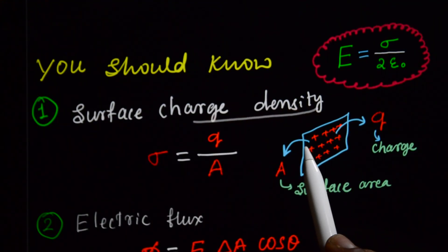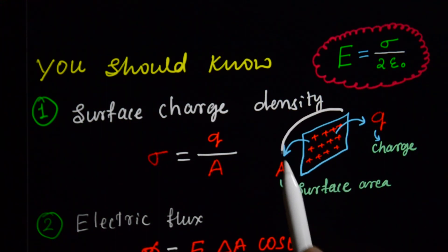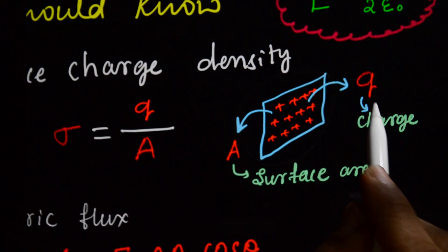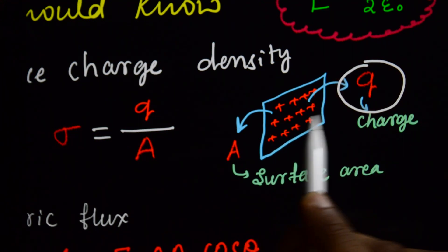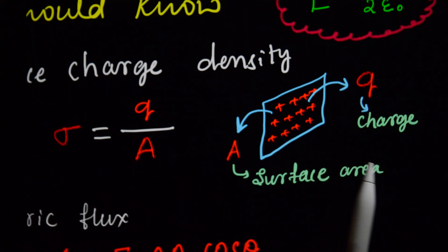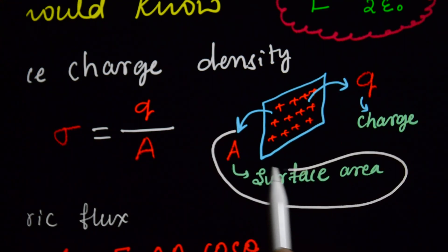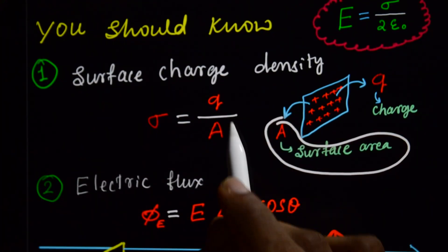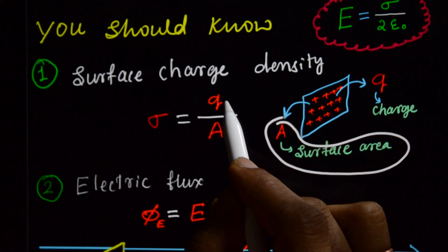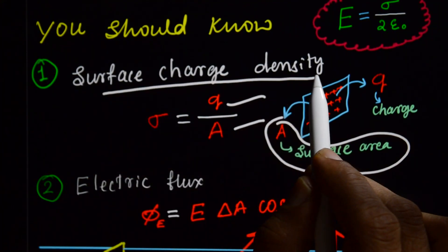Suppose this is the sheet — a plane sheet — and Q is the charge distributed over that plane sheet. The area of the plane sheet is A. The ratio of charge to area is the surface charge density sigma.